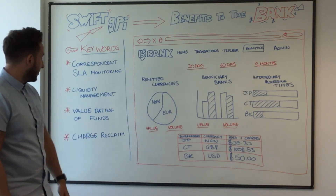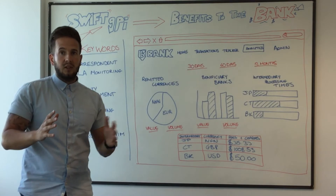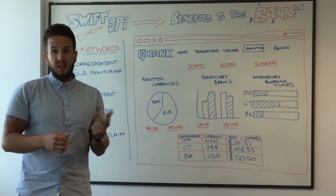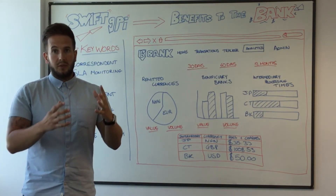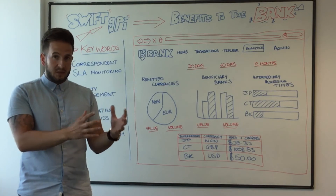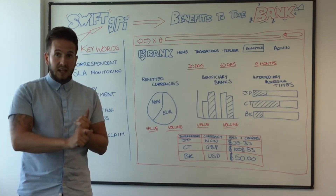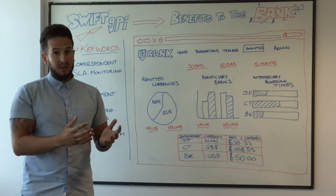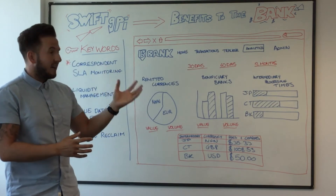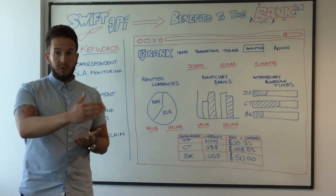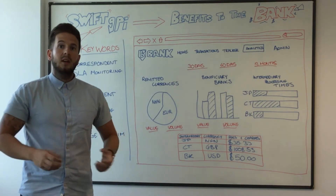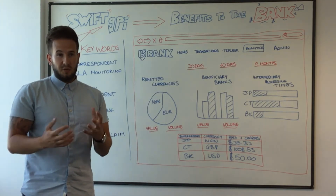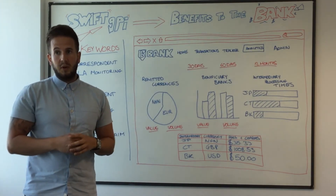We also have a charge reclaim process. Any messaging moving around the SWIFT network is going to be subject to some level of charging — whether that's correspondent fees, beneficiary bank fees, or intermediary fees. That's an untapped revenue stream for a lot of banks because the process to reclaim those charges is quite onerous. You need investigation teams and staff to look at the payment messages coming in and determine which are eligible for charging. With GPI, you have all that data available in a single source, so you can produce tools and analytics to pull that down, and send out invoices to your correspondent banks, beneficiary banks, and remitters to claim back these charges. It's really opening up revenue streams for the banks.